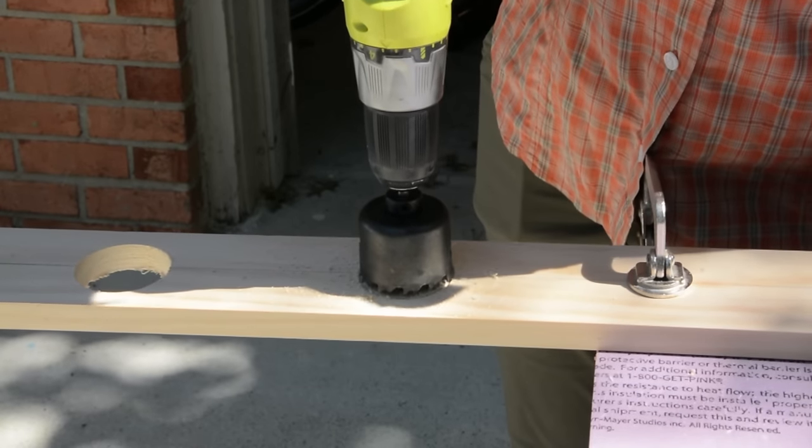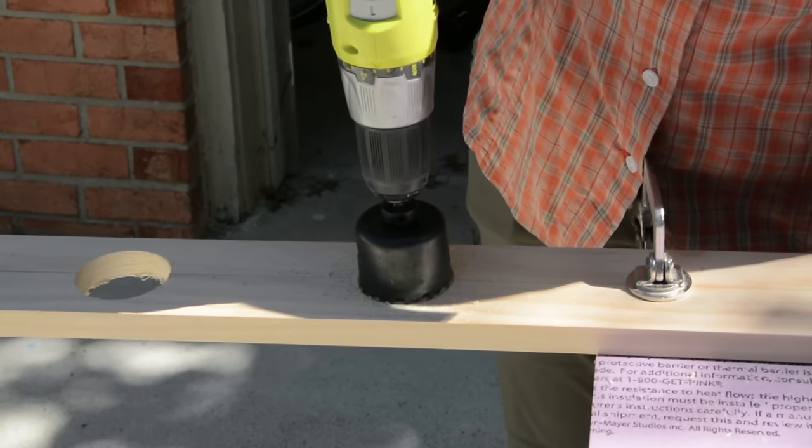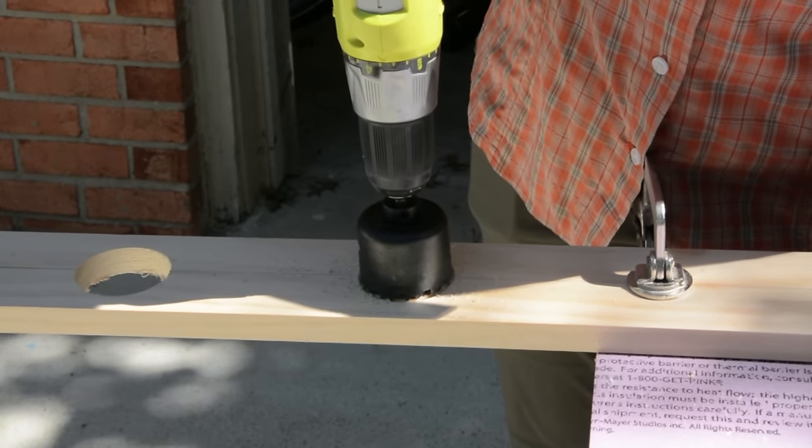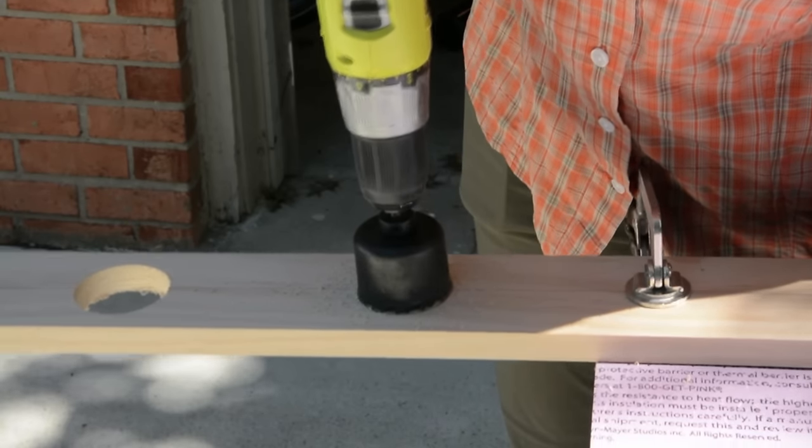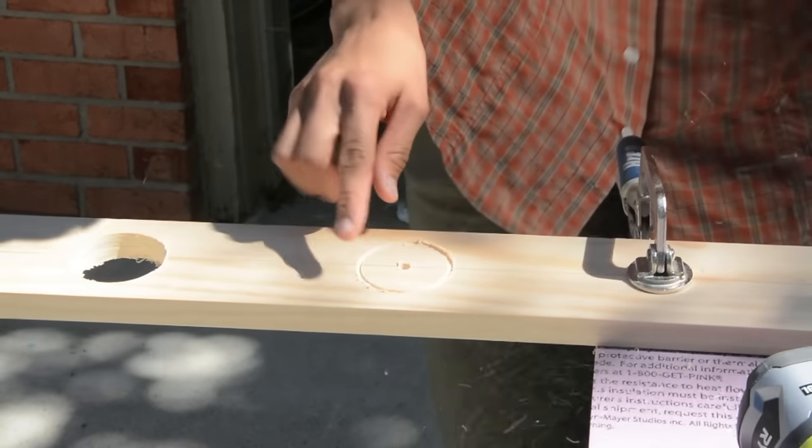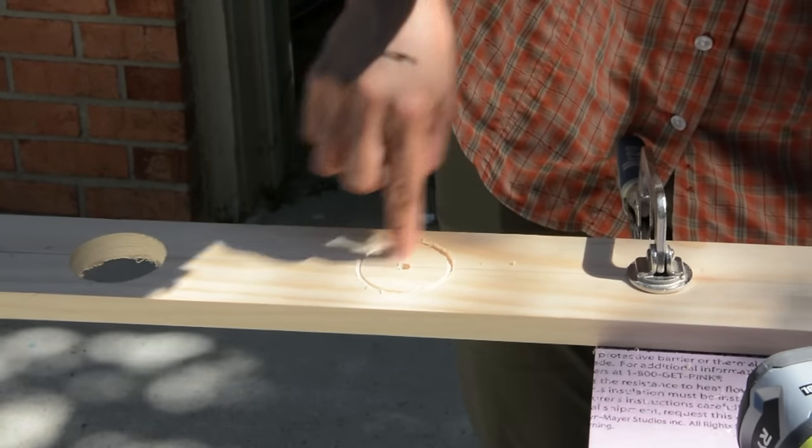Now you can also use a jigsaw to cut these holes. I just prefer the hole saw because it's a nice, clean hole. Jigsaws, you have to be really, really exact. And you see what you're doing is you're starting to cut out this circle.